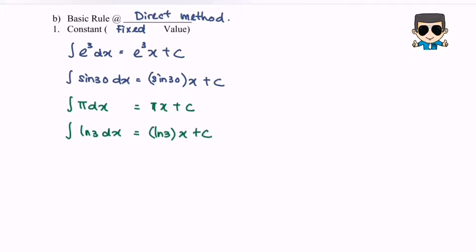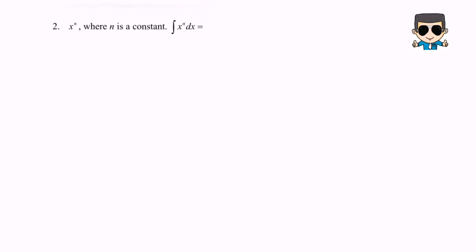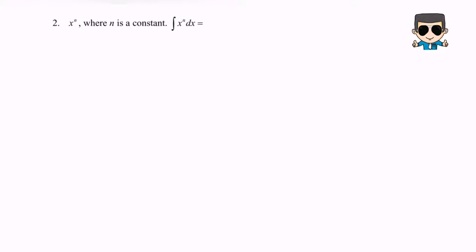So those are the examples for the constant or fixed value. The second situation for the basic rule or direct method would be x to the power of n, where n is a constant. Given integrate x to the power of n with respect to x, the result would be x to the power of n plus 1 divided by n plus 1, plus C.